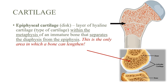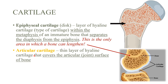We also have articular cartilage, which is made of hyaline cartilage and is connected to the actual joint. It covers the area where the joint is created — that gray area visible here is the articular cartilage.